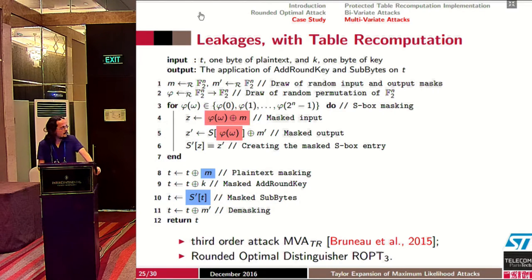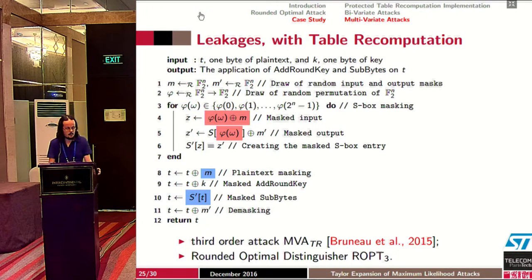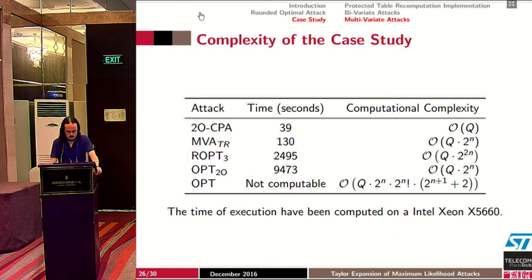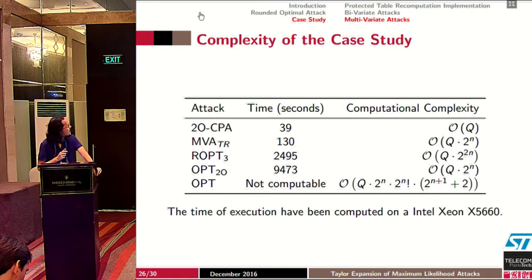The first example of attacks targeting shuffled table recomputation was presented at CHES 2015: the multivariate attack on table recomputation, which is a third-order attack. We can also apply our new rounded optimal distinguisher at degree 3. Studying the complexity of this case study, the optimal distinguisher is not computable due to the high factorial terms, and our new attack is longer to compute than the multivariate attack — but we will see that it gives better results.